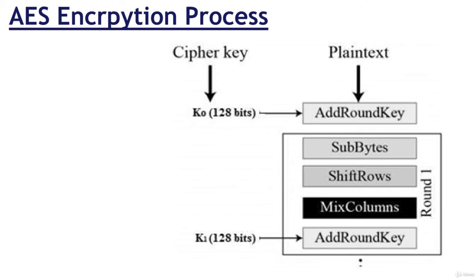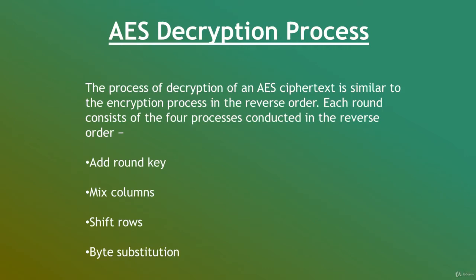If this is the last round, then the output is the ciphertext. Otherwise, the resulting 128 bits are interpreted as 16 bytes and we begin another similar round. The process of decryption of an AES ciphertext is similar to the encryption process but in reverse order. Each round consists of the four processes conducted in reverse order: add round key, mix columns, shift rows, byte substitution. Since the sub-processes in each round are in reverse manner, unlike a Feistel cipher, the encryption and decryption algorithms need to be separately implemented, although they are very closely related.